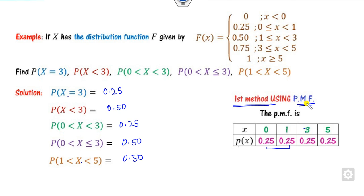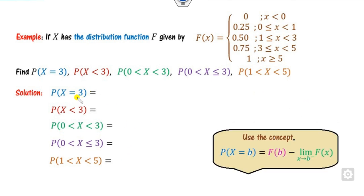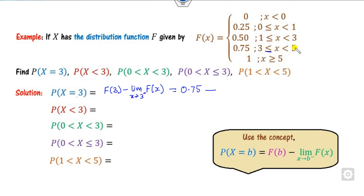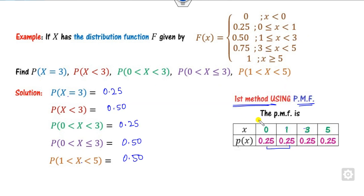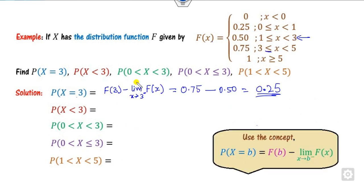Method 2 uses the CDF. For P(X = 3): F(3) − lim[x→3⁻] F(x) = 0.75 − 0.50 = 0.25. You can see the answer using the CDF or using the PMF — both are the same.